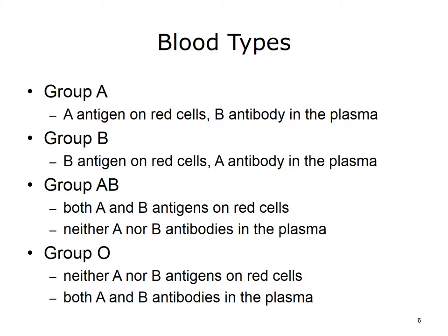It is important to know what antigens and antibodies are present in the blood. There are four major blood groups determined by the presence or absence of two antigens, A and B, on the surface of red blood cells. Group A has only the A antigen on red cells and B antibody in the plasma. Group AB has both A and B antigens on red cells, but neither A nor B antibodies in the plasma. Group O can donate red blood cells to anybody. If you have type O blood, then you are known as a universal donor.